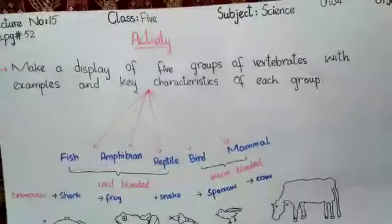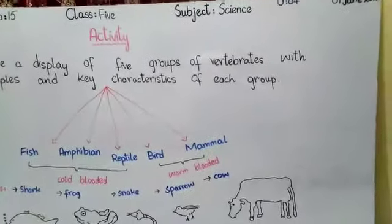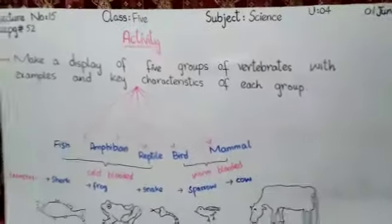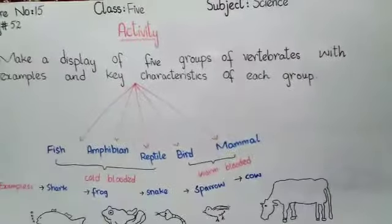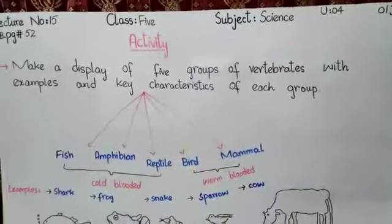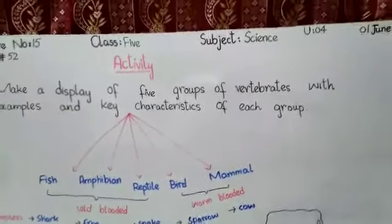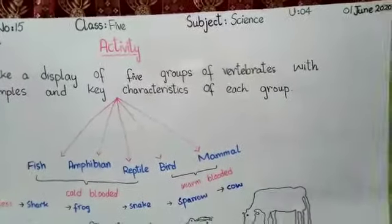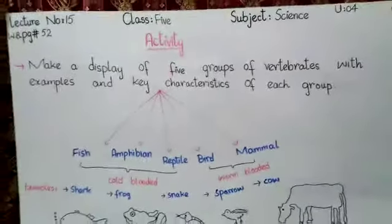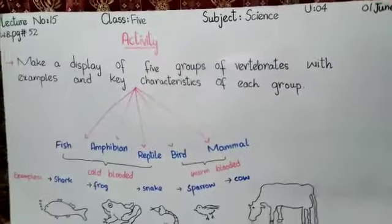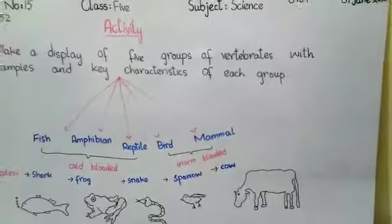You can build this display using your own ideas. I am going to guide you to solve it. You can take sticky papers and chart papers, whatever you want, to make an attractive display. As you know, this chapter is about the classification of living things. Animals can be classified according to whether they have a backbone or not. Vertebrates are animals that have a backbone, and those without a backbone are invertebrates.